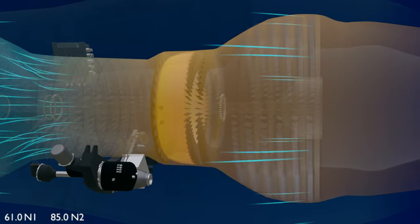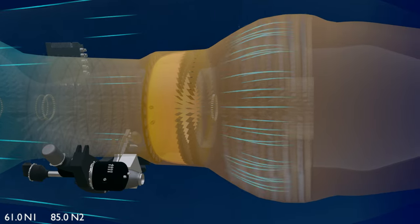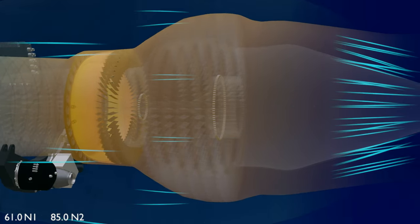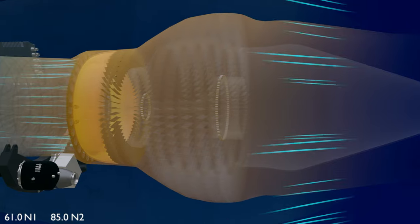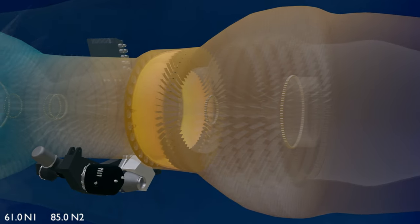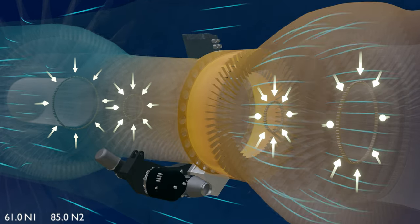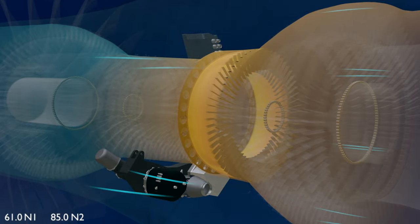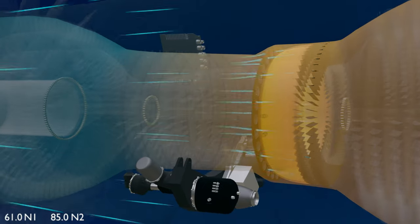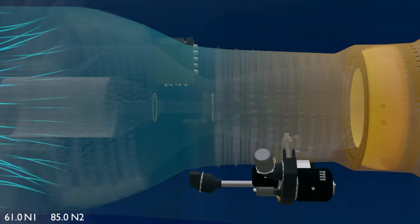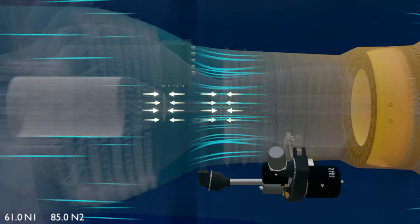In the aft section, number four roller bearing and number five roller bearing hold the rear of the N2 and N1 shaft respectively. The four roller bearings take the radial loads of the engine. The two ball bearings are the thrust bearings and take the axial loads of the engine.